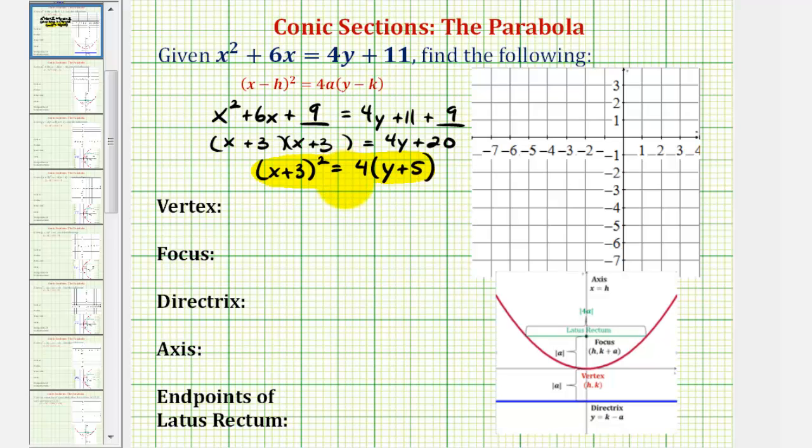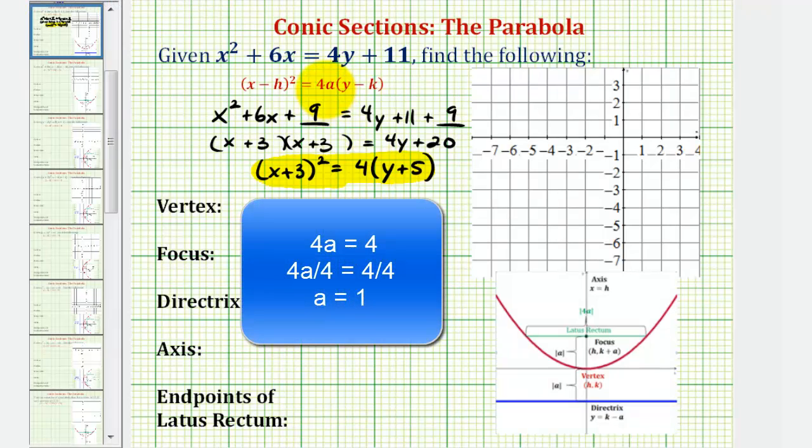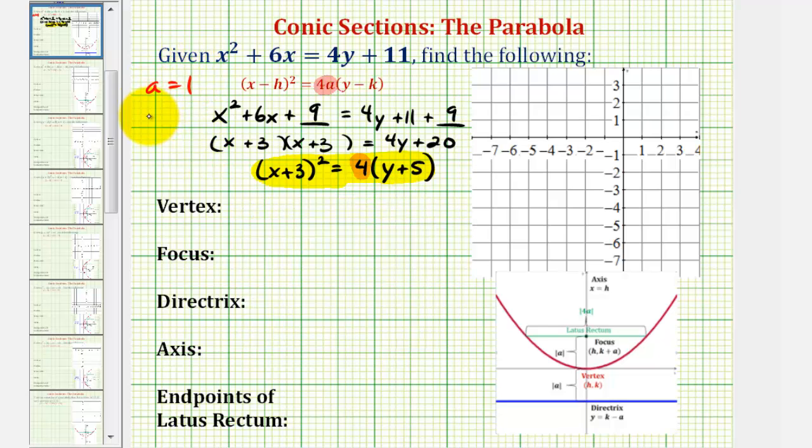The parabola will open up or down based upon the value of a. If a is positive, the parabola opens up, and if a is negative, the parabola opens down. For this example, notice that 4a is equal to positive 4, therefore, a is equal to 1, or positive 1, therefore, we know the parabola opens up.